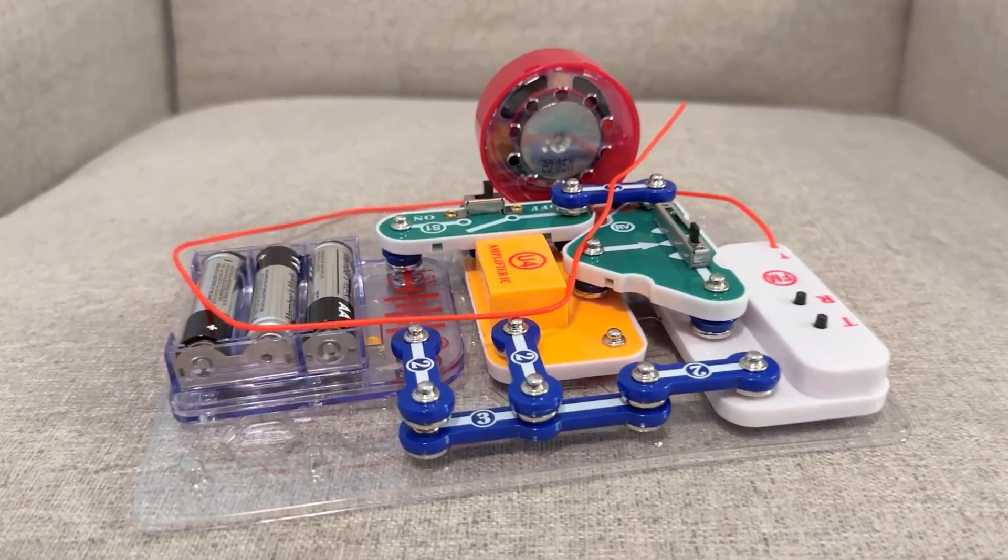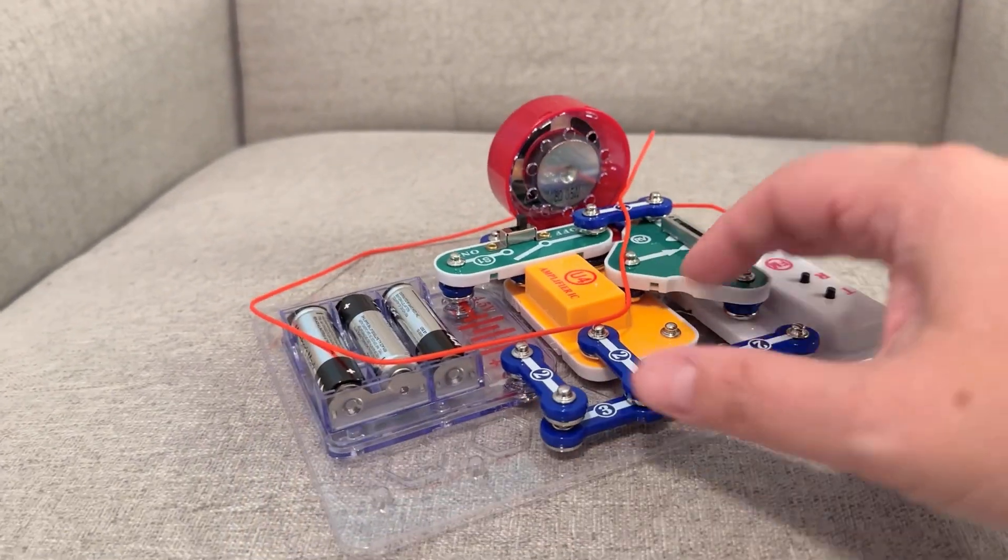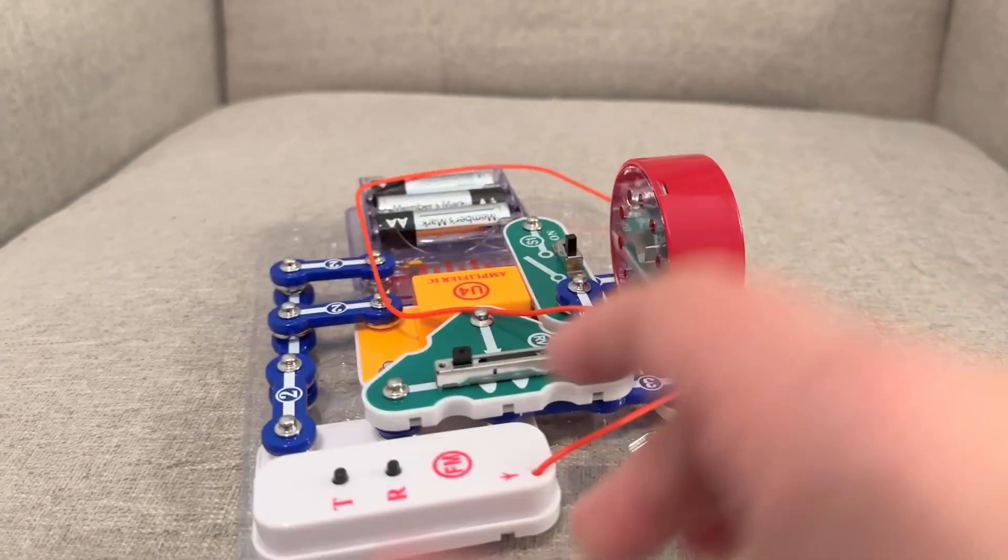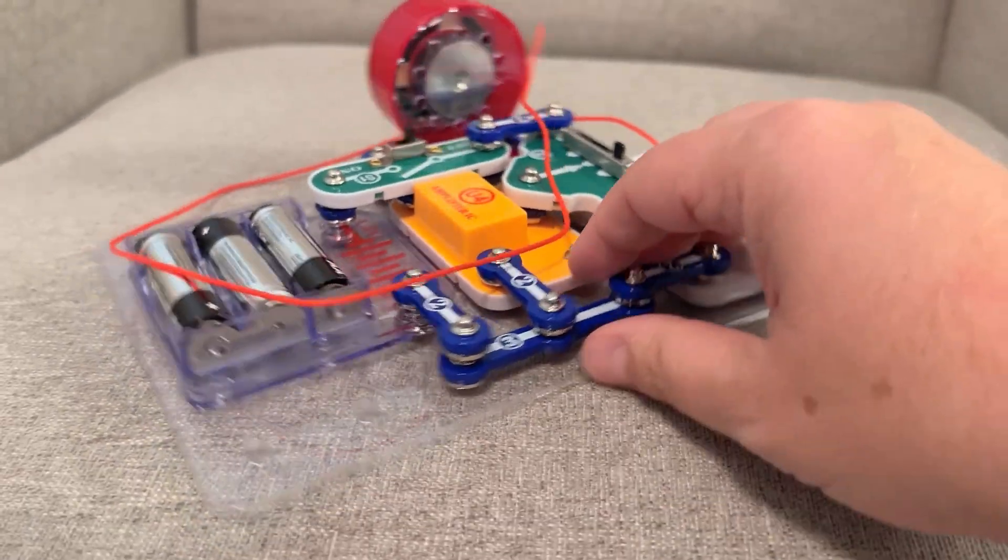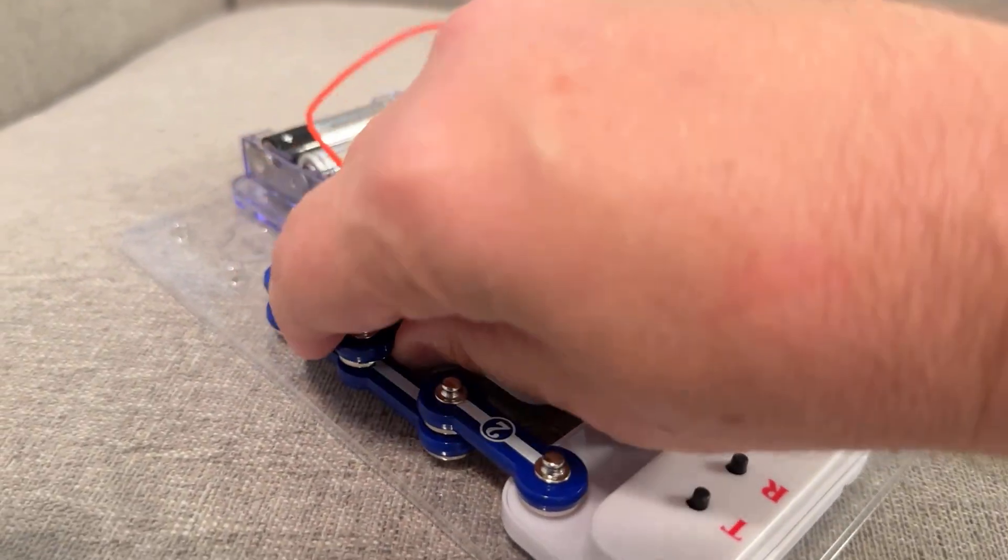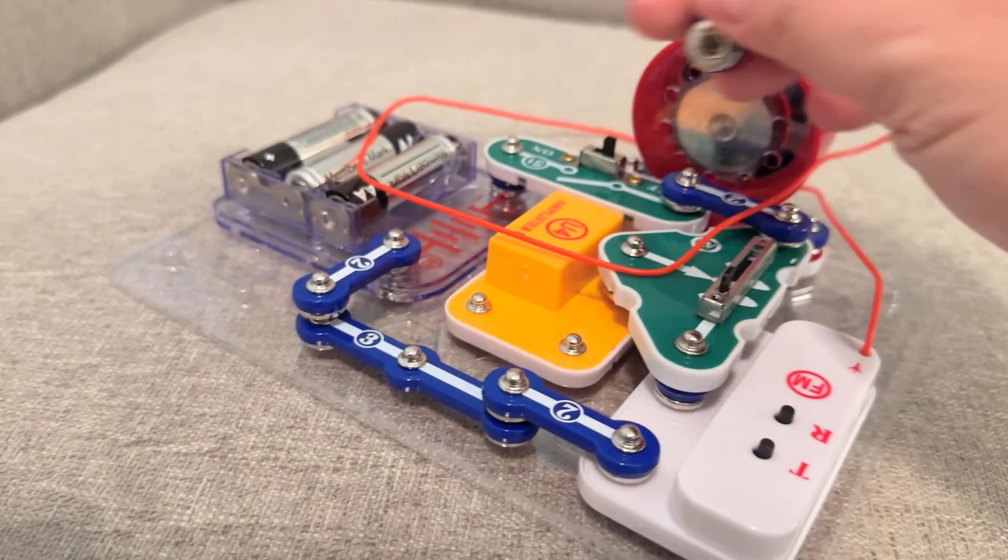So this is the FM radio that my son and I just put together. It comes with all these little pieces here. As you can see, this just pops off like a button, and you just put it back on here and here.